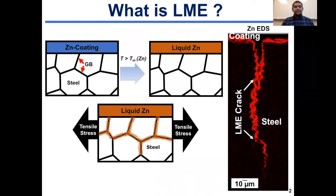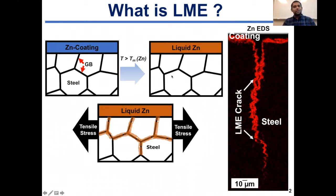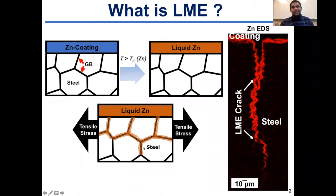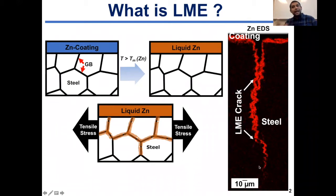What is liquid metal embrittlement? If we have a zinc-coated steel, the zinc coating is on the surface of the steel. If we heat the zinc-coated steel to a temperature above the zinc melting temperature, we will have liquid zinc in contact with the solid steel. In that condition, if we simultaneously apply a tensile stress, the liquid zinc from the coating starts to penetrate into the steel via the grain boundaries, weakening the steel and giving rise to surface cracks. In the picture to the right, that's a zinc EDS map from a hot tension-tested zinc-coated specimen — that's the coating, that's the steel — and the zinc EDS map tells us the zinc from the coating has penetrated into the steel, so that's an LME crack.